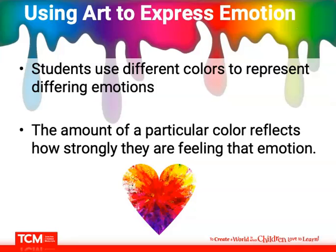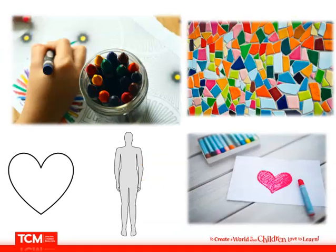You can also have students use art to express emotion, using different colors to represent different emotions. They can use a variety of colors within a heart or another shape to express the differing emotions they might be feeling and how strongly they feel those emotions. This builds complexity — that we're not always feeling just one emotion at a time, and that multiple emotions can be felt simultaneously. You might have students color in a geometric shape, a heart, or an outline of a person, coloring the places in their body where they most feel those emotions.